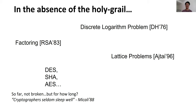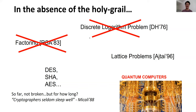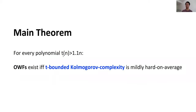A good cryptographer still doesn't sleep well, said Micali in 1988 — if you have some scheme, you are always worried about being broken. Furthermore, if we have quantum computers, then the factoring problem and the discrete logarithm problem can be solved efficiently, so have we really escaped from the ancient crypto cycle? The central question is: does there exist some natural average-case hard problem that characterizes the existence of one-way functions? Our main theorem says: for any polynomial t that is at least 1.1n, one-way functions exist if and only if t-time-bounded Kolmogorov complexity KT is mildly hard on average.